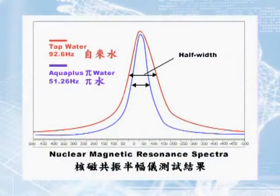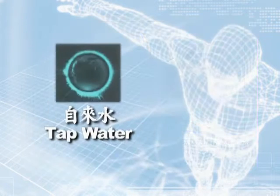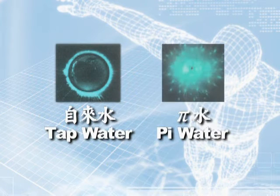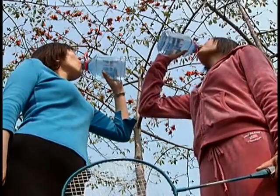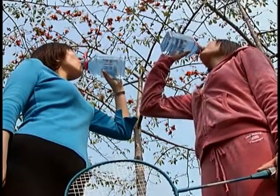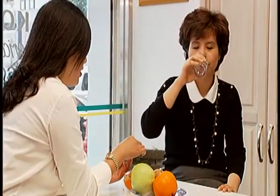Scientists found that pie water reaches 52 Hz on the half-width spectra of the nuclear magnetic resonance. Compared with tap water, pie water shows extremely strong aura energy in Kirlian pictures. Therefore, pie water is believed to improve metabolism, enhance regeneration ability, and clean out harmful metal ions.